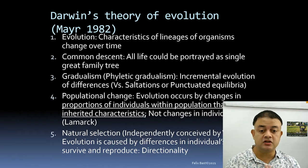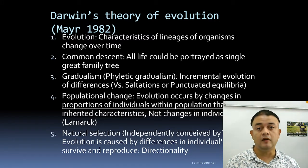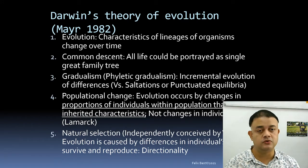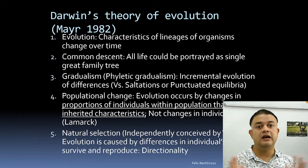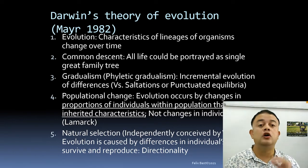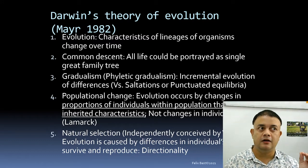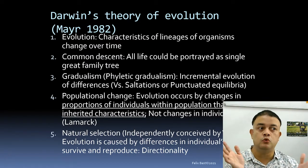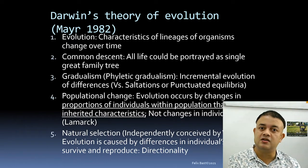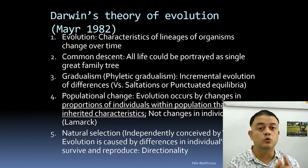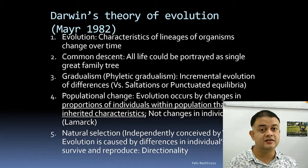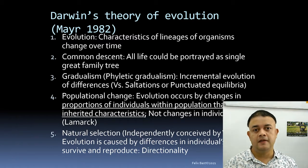The fifth point is natural selection, independently conceived by Alfred Russel Wallace. Evolution is caused by differences in individuals' ability to survive and reproduce. There is directionality — it's not random. Only those individuals well fit to their environment, with a competitive advantage over other members of the same species, survive to reproduce and pass on their genes. These are the five points of Darwin's theory as summarized by Ernst Mayr.